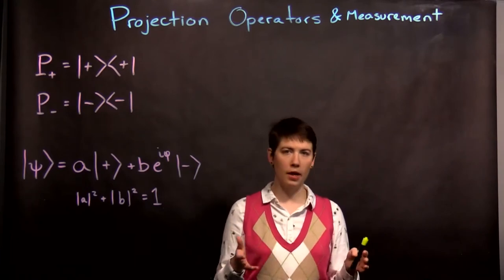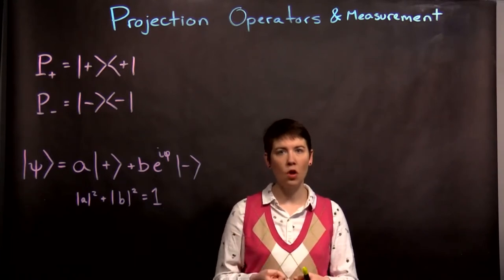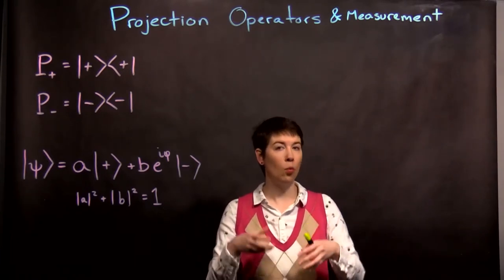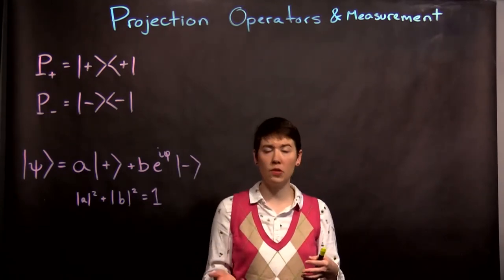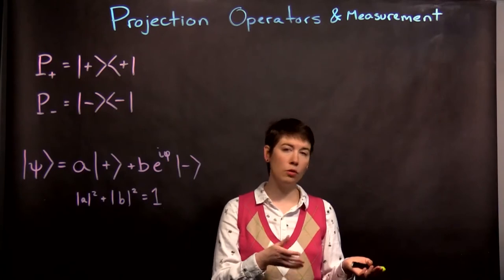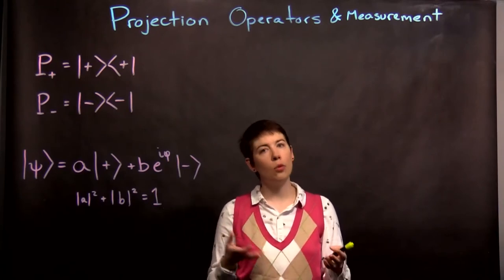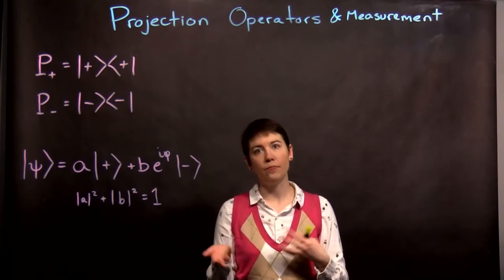When we're measuring our spin one-half system, we ask questions such as: when I measure the spin, what is the value I get? The answer for a spin one-half system is plus h-bar over 2, spin up we call that, or minus h-bar over 2, spin down.